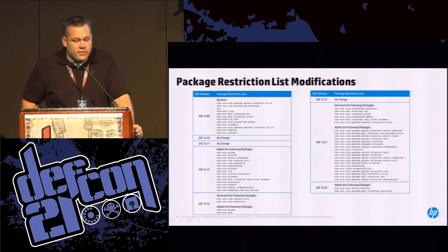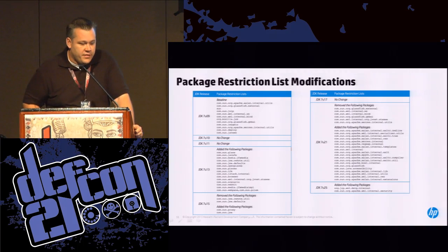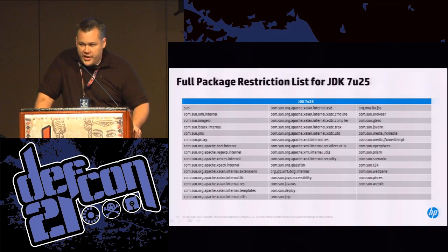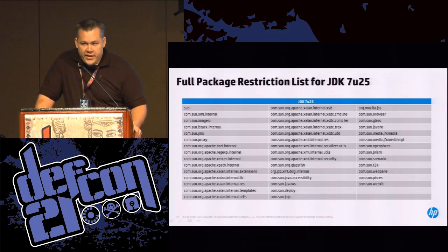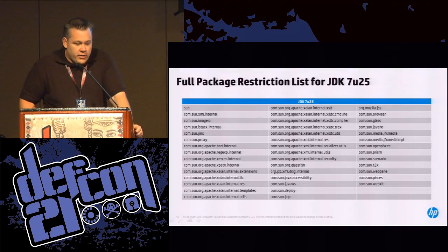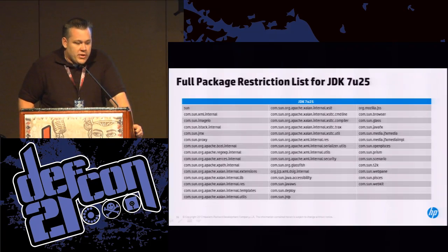You can take this mapping and reduce the amount of work needed to look for bugs in Java. The full package restriction list for JDK7U25 has 43 packages — quite a change from U9 which had 12 — with a lot of com.sun or Apache packages. You can expect in the future they'll probably remove some of those and add higher-level packages.